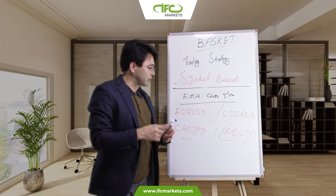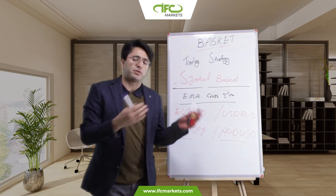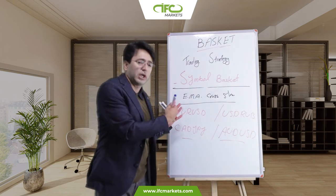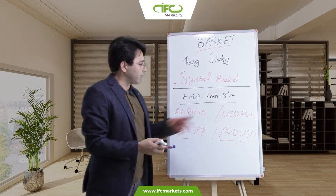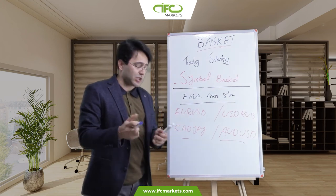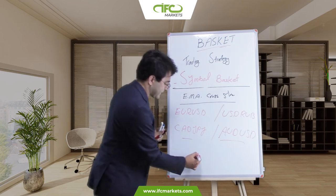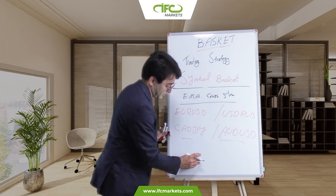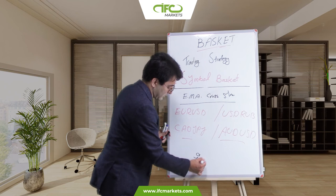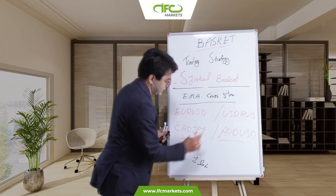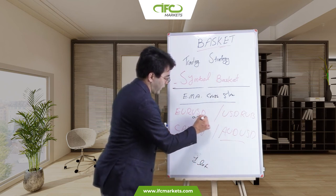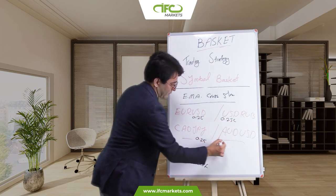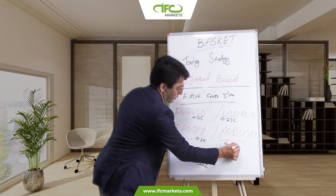They don't always move together — sometimes in the same direction, sometimes in different directions — and they follow different reasons, different economies, different time zones. If you want to trade one lot, same as the strategy basket, you divide your one lot into four pieces: 0.25 lot for each symbol, including AUDUSD.